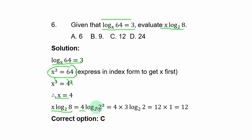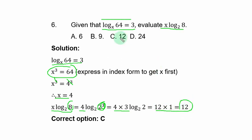Express 8 as 2³. By the power law of logarithms, log₂ 2³ = 3 · log₂ 2 = 3 × 1 = 3. So 4 × 3 = 12. The correct option is C.